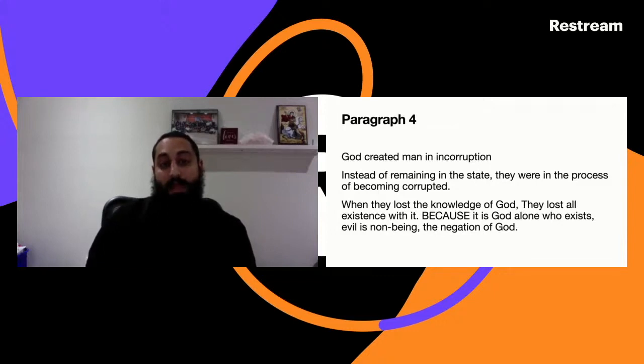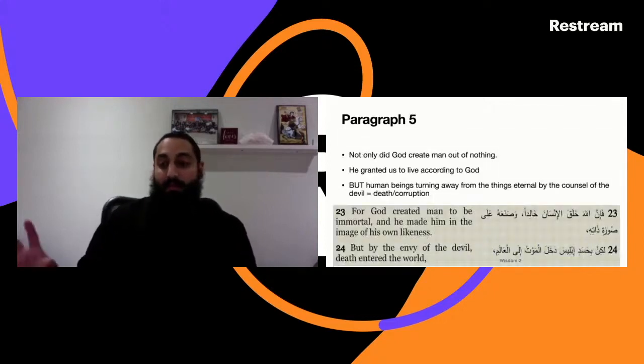Paragraph four: God created man in incorruption. Instead of remaining in this state, they were in the process of becoming corrupted. When they lost the knowledge of God, they lost all existence with it, because it is God alone who exists. Evil is non-being, the negation of God. Just like darkness is not a force and does not exist but simply is the absence of light, so death is also the absence of life. The source of all life is God.